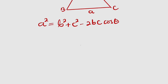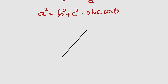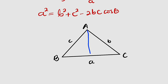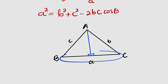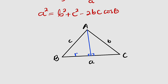Now let us see how we can derive this very important formula. We have a triangle — this is c, this is b, and this is a. I would like to draw a line perpendicular to line BC from A, forming a right angle triangle. The distance from B down to this point I'll call r, and from here down is h, so the remaining portion of side a is a minus r.